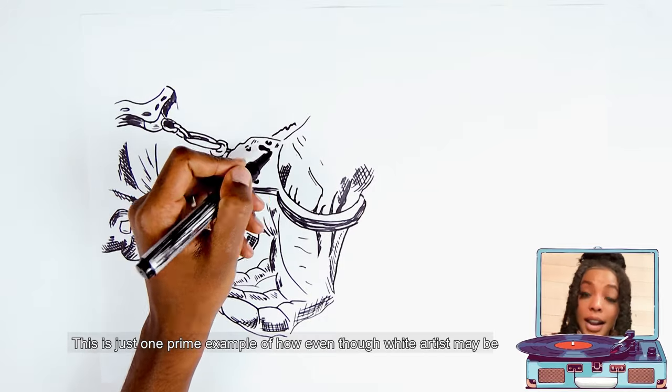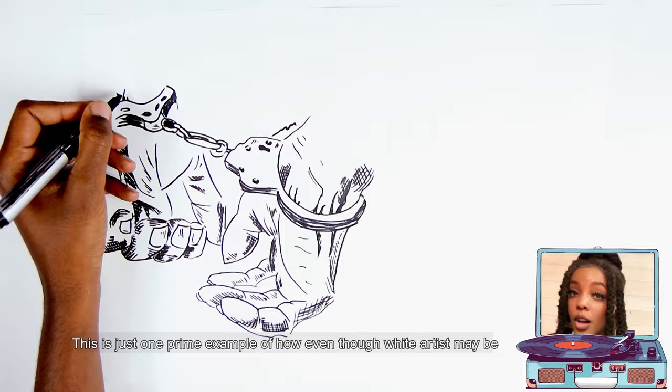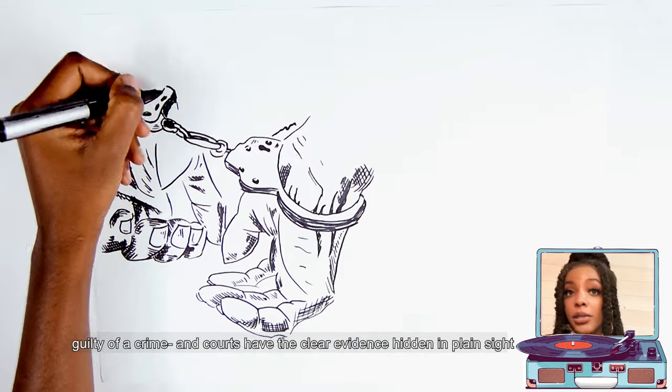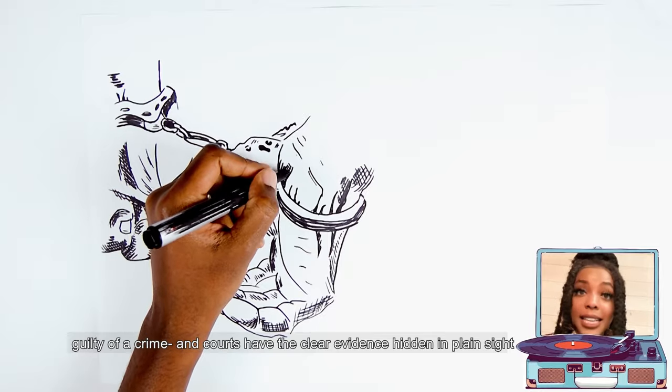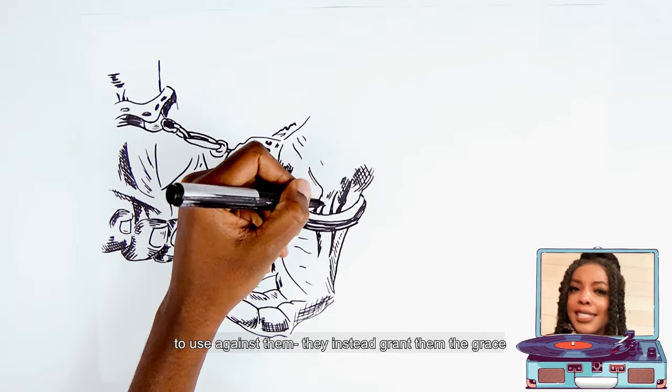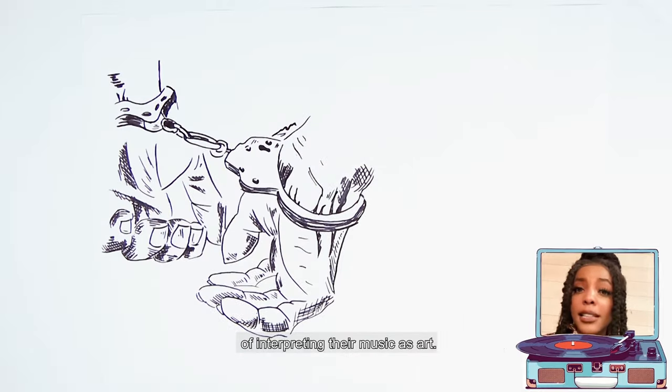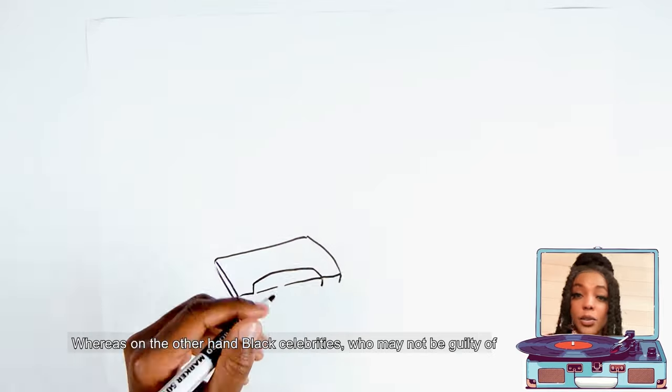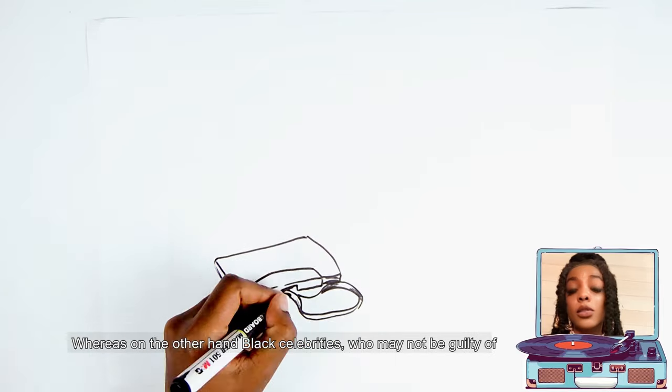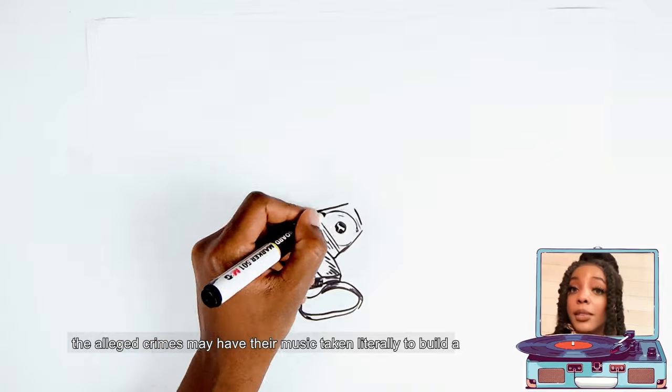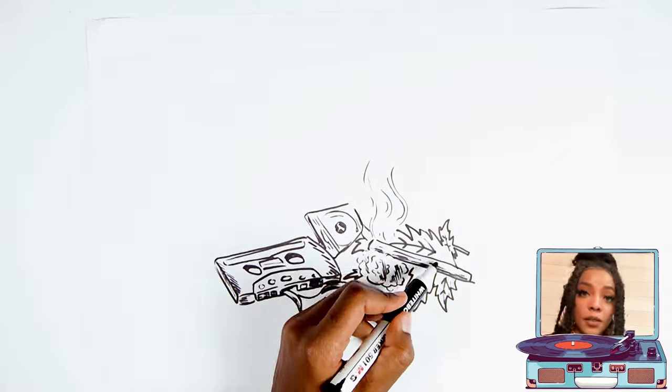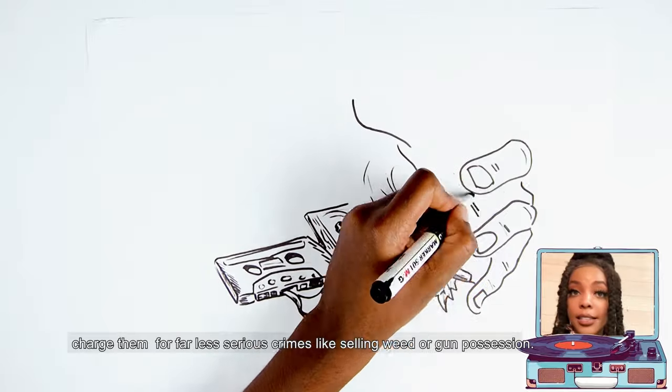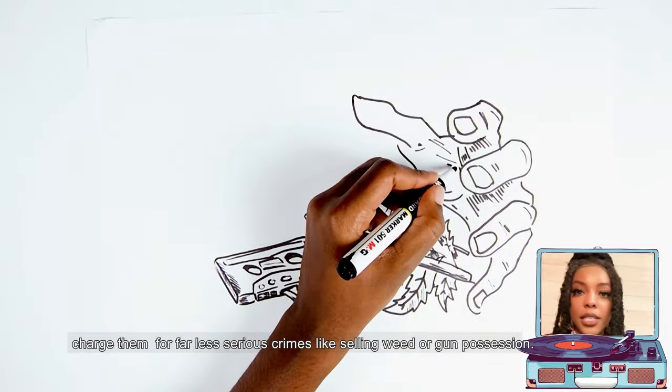This is just one prime example of how even though oftentimes white artists may be guilty of a crime and courts have clear evidence hidden in plain sight to use against them, they're instead granted the grace of interpreting their music as art. Whereas on the other hand, black celebrities who may not be guilty of their alleged crimes may have their music taken literally to build a witch hunt against them or charge them on far less serious crimes like selling weed or gun possession.